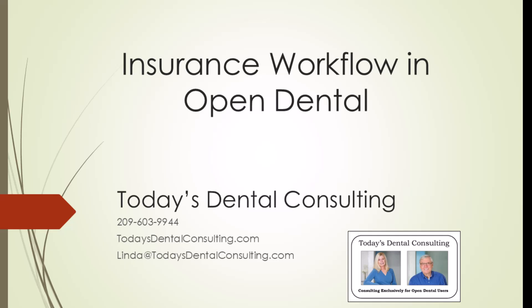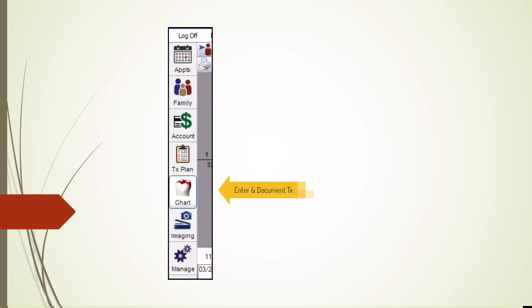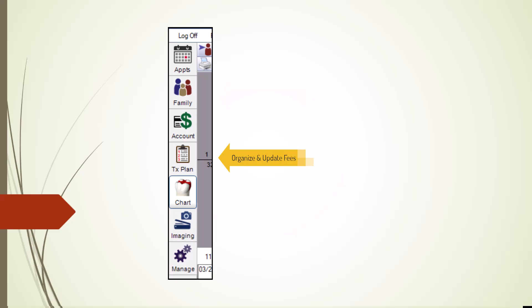We'll be using several different modules in Open Dental. First, we'll use the Chart module to enter accurate procedure codes and document why the procedures are necessary. Next, we'll move to the Family module to enter insurance information. Then, we'll proceed to the Treatment Plan module to organize the treatment and update fees. Finally, we'll use the Manage module to send claims and receive payments.